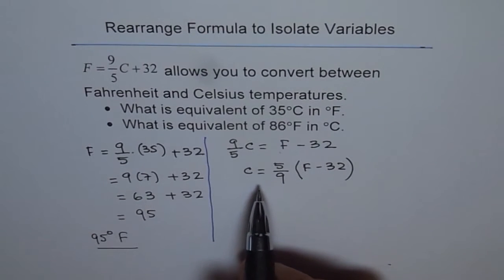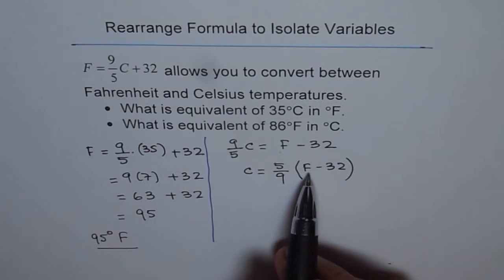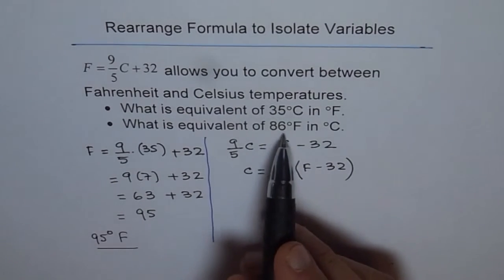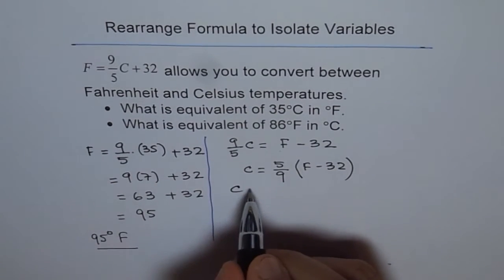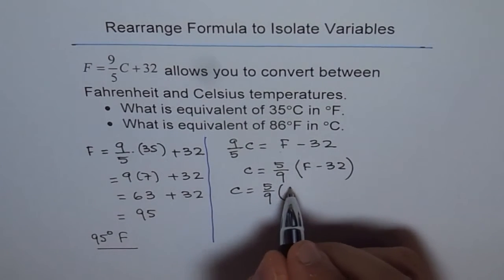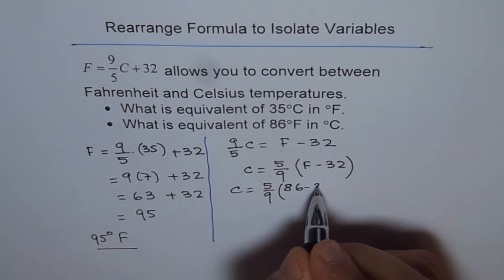And this formula will convert temperatures in degree Fahrenheit to degree Celsius. Now, 86 degree Fahrenheit. So we will say, C is equal to 5 over 9, 86 for F minus 32.